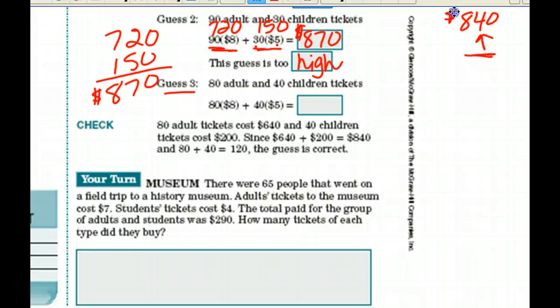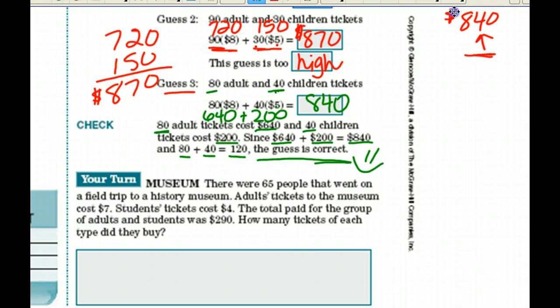Let's move on to guess number three. We've gone too low, now too high with $870. Let's try 80 adult and 40 children. 8 times 8 is 64 for $640. 40 children's tickets at $5 a piece, that's 40 times 5 would be 200. 80 adult tickets cost $640 and 40 children's tickets cost $200. Since $640 plus $200 is $840 and 80 plus 40 is 120, the guess is correct. We know that they sold 80 adult tickets and 40 children tickets.